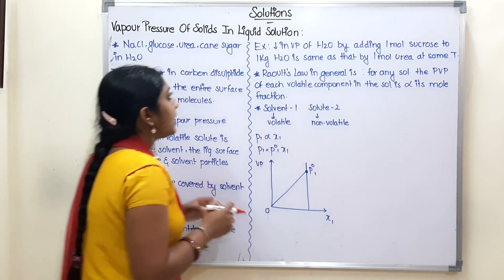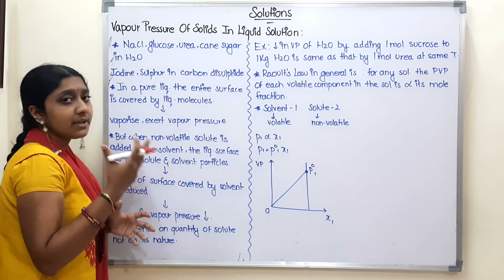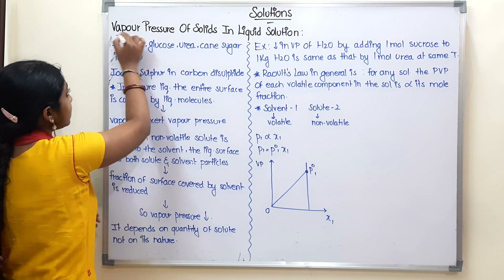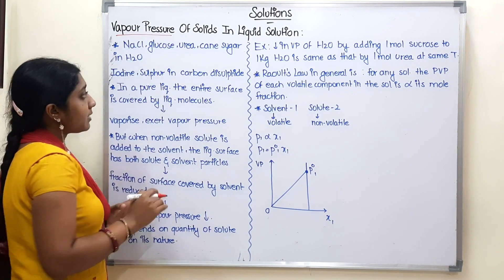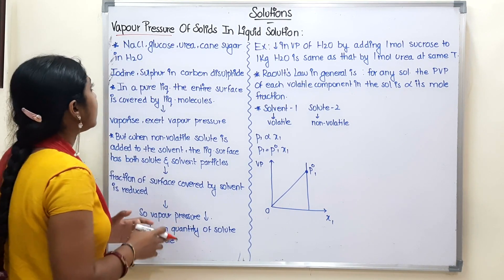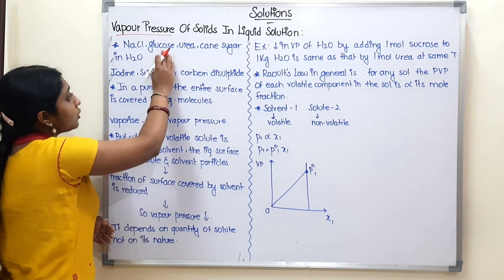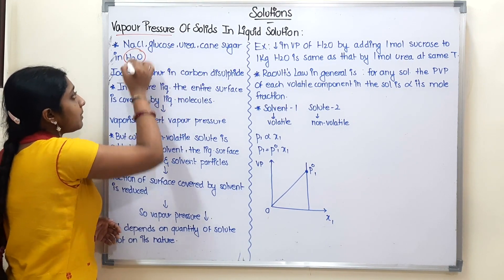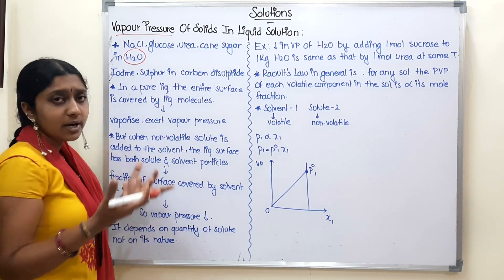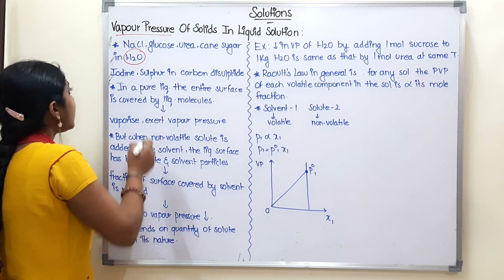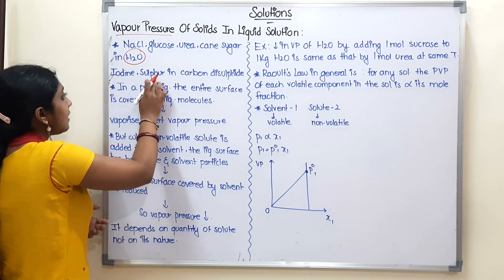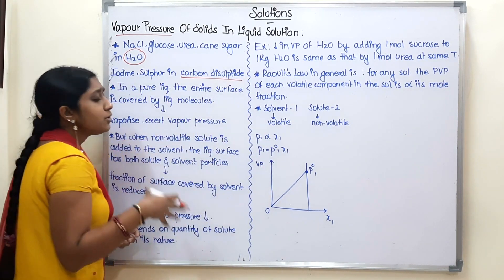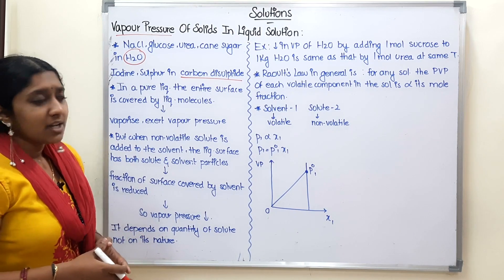Now, we are going to talk about a solid-liquid solution — Vapor Pressure of Solids in Liquid Solution. How do you see the vapor pressure in that solution? Let's talk about examples: NaCl, Glucose, Urea, Cane Sugar — these are solid-in-liquid solutions. Also Iodine, Sulfur, and Carbon Disulfate — these are also solid-in-liquid solutions.